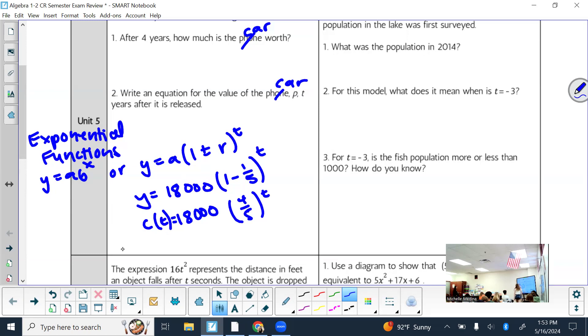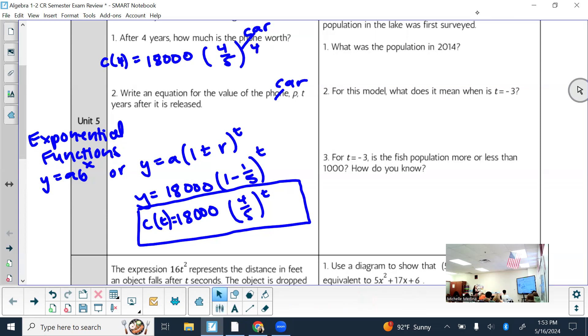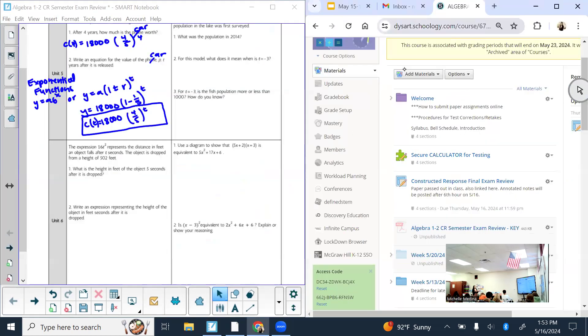So what is one minus one fifth? Four fifths. And four fifths is a decimal that ends, so you could put 0.8 as well and that would still work. If it wants function notation, then I'd probably write it like this: P of T equals 18,000 times four fifths to the T. This is the answer for number two, so number two just wants it in terms of time and years since it was released.